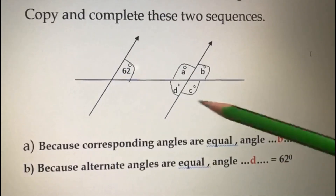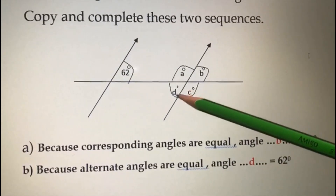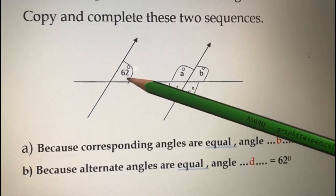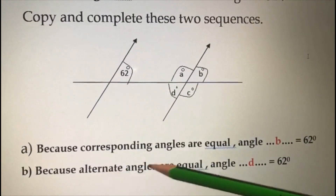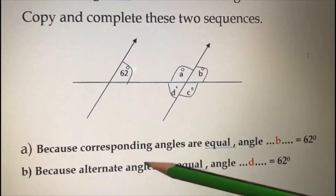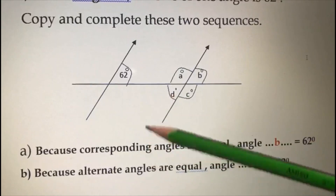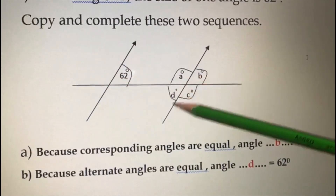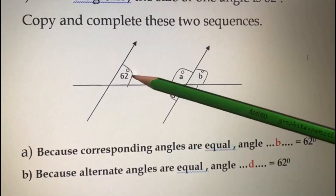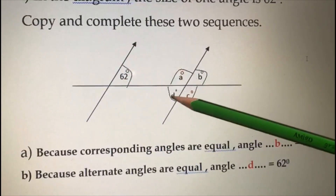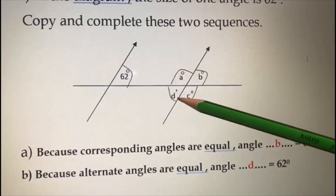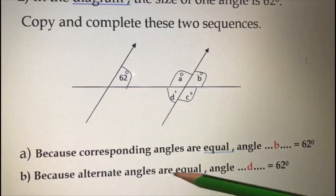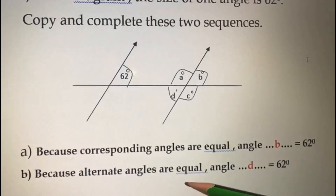Now for alternate angles — angle D. We know this angle is 62 degrees. Think about the letter Z, draw Z from here — this angle and angle D are alternate angles. So angle D is also 62 degrees, because alternate angles are equal.